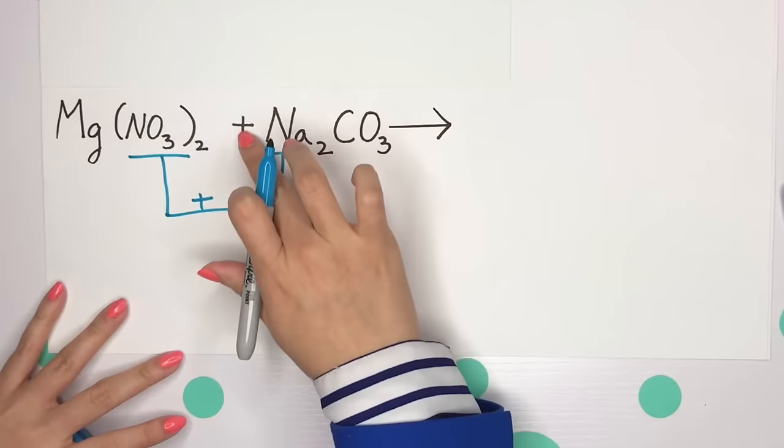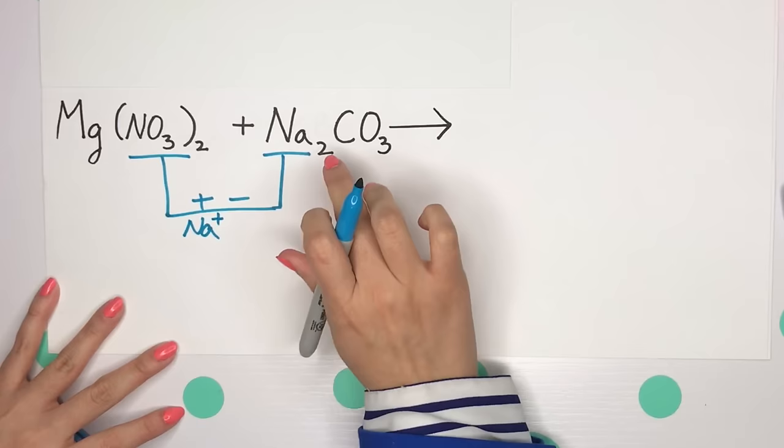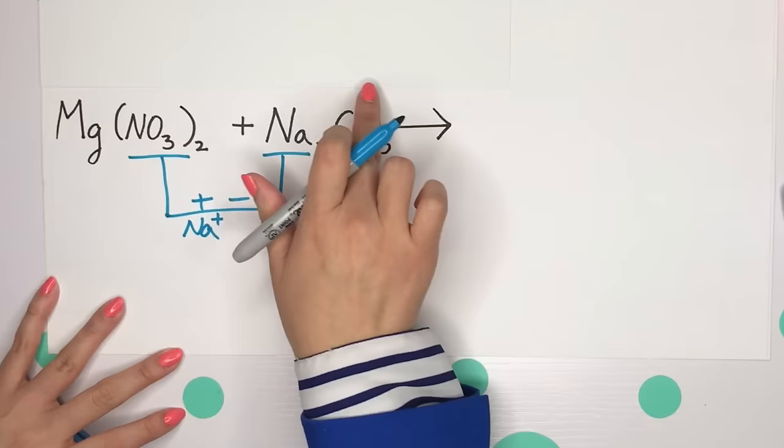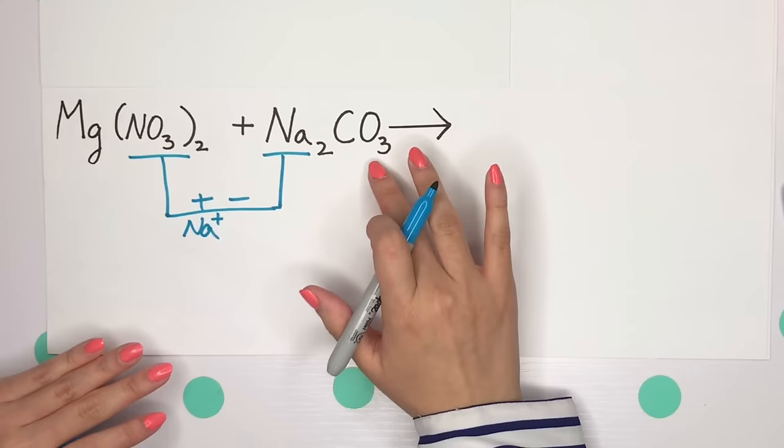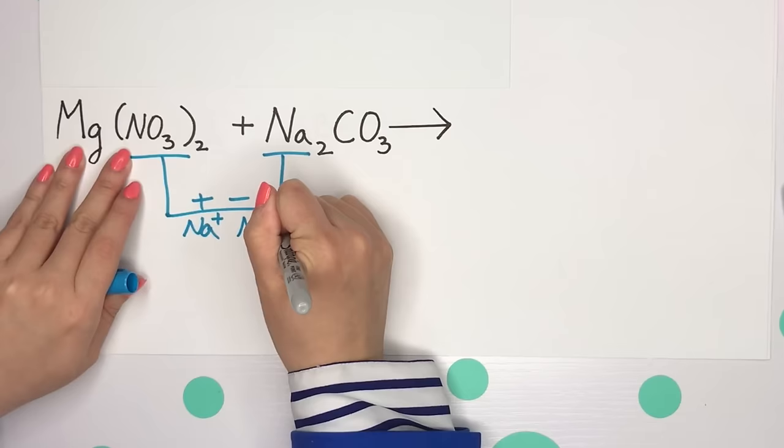So, our positive is that metal or that Na. This has a positive 1 charge. I'm not bringing that 2 subscript down because that 2 was only there to balance out sodium within this compound or combining to carbonate. Next, let's go ahead and bring down that NO3 with a negative 1 charge.